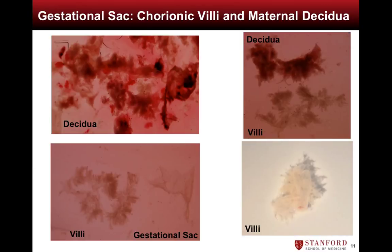Differentiating chorionic villi from maternal decidua can be challenging, so we demonstrate several examples here. The top left image is of decidua, compared to the delicate villi shown on the bottom left, adjacent to the almost transparent gestational sac. On the right we show an example of decidua adjacent to villi, and below an image of villi alone. Notice the delicate, frond-like architecture that is characteristic of chorionic villi.